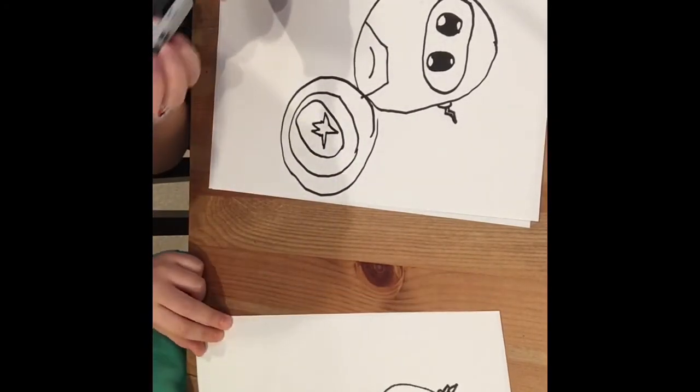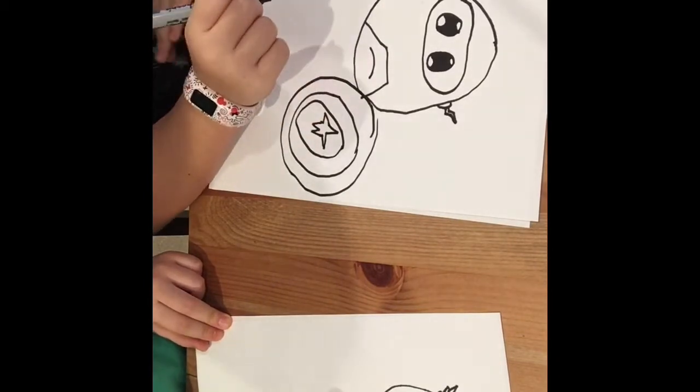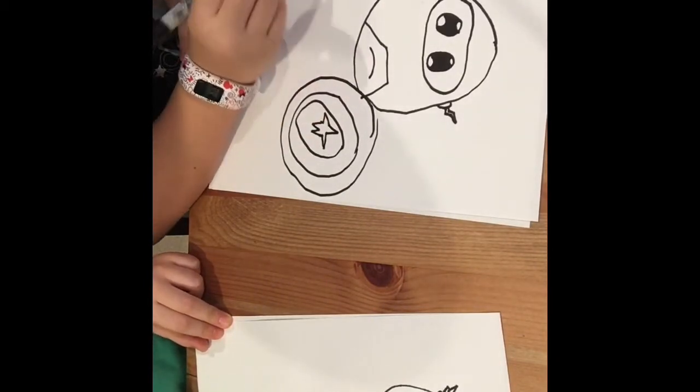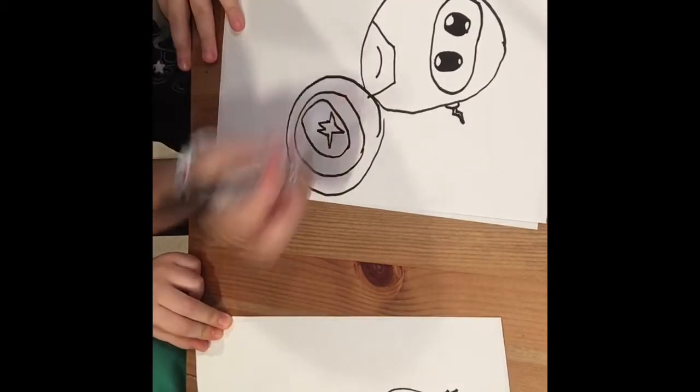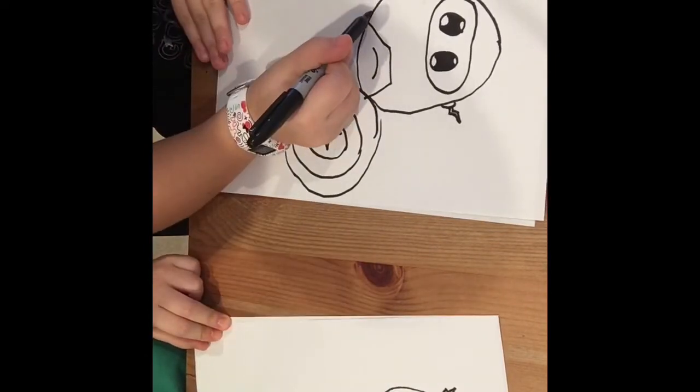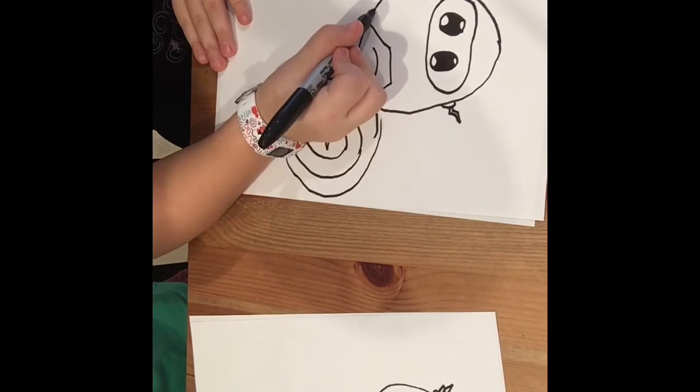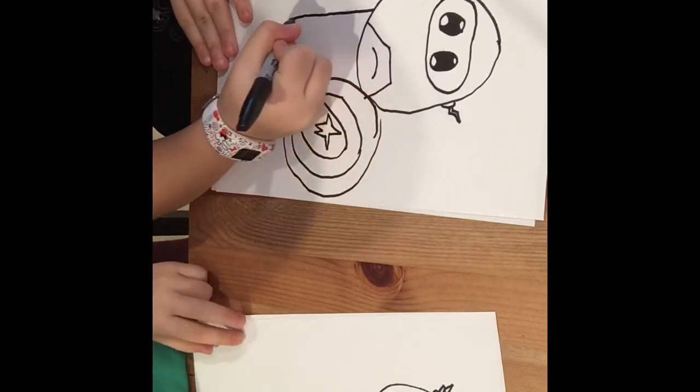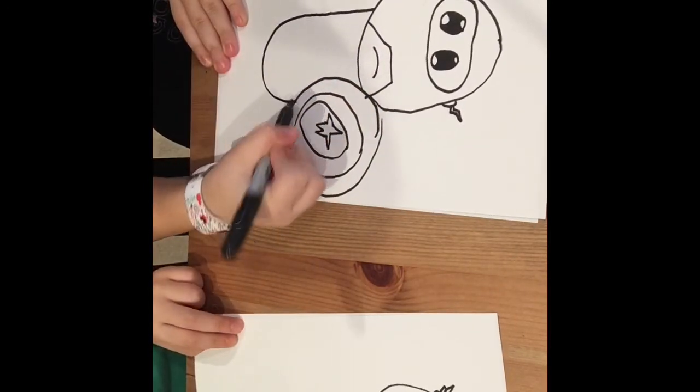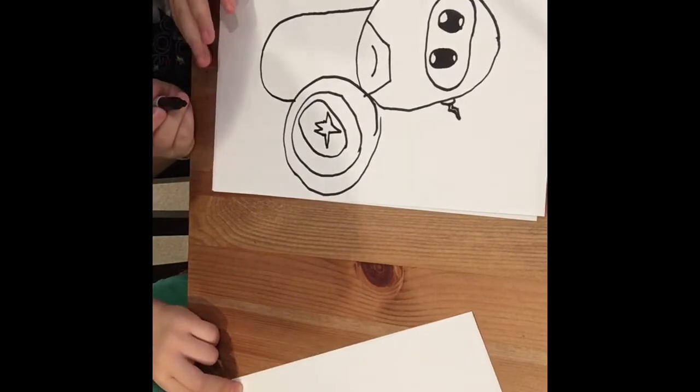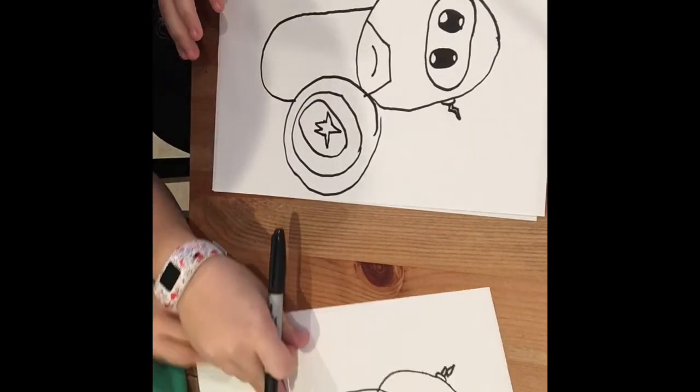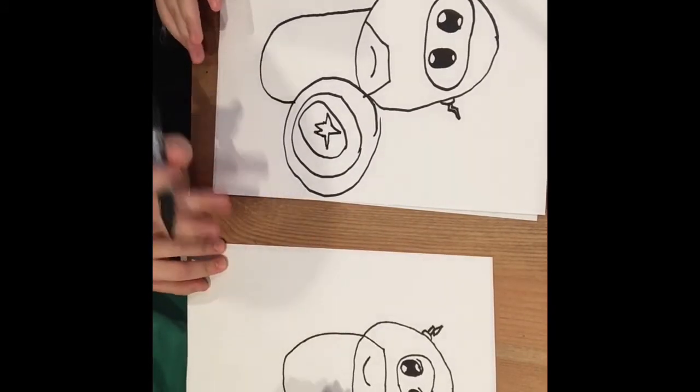And then we're gonna draw the body. Is the body supposed to come out from that? Is the body supposed to be curved like that? And now we're gonna draw the hand. Mian, can you see it? We're gonna draw the hand now.